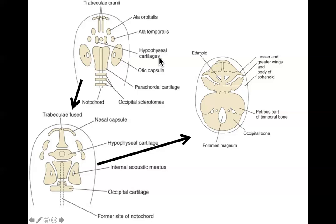These hypophyseal cartilages are going to join together and fuse, with a little space hollowing out in the middle to house the pituitary gland. This is going to become eventually the ethmoid and the sphenoid bone. You also have the ala orbitalis and ala temporalis — these are going to become the greater and lesser wings of the sphenoid bone. Specifically, the ala orbitalis becomes the lesser wing and the ala temporalis becomes the greater wing of the sphenoid, respectively.